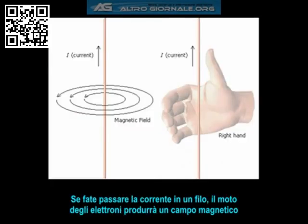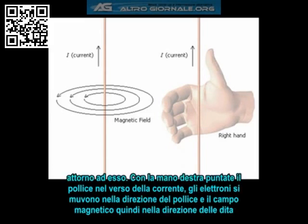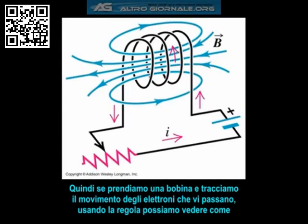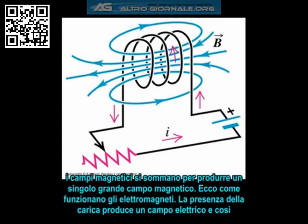If you run current through a wire, the motion of the electrons passing through the wire will produce a magnetic field around the wire. Take your right hand and point your thumb in the direction of the current — as the electrons move in the direction of your thumb, they produce a magnetic field in the direction which your fingers curl. So if we take a coil of wire and trace the movement of the electrons passing through it using the right-hand rule, we can see how the magnetic fields all add up to produce a single large magnetic field. This is how electromagnets work.